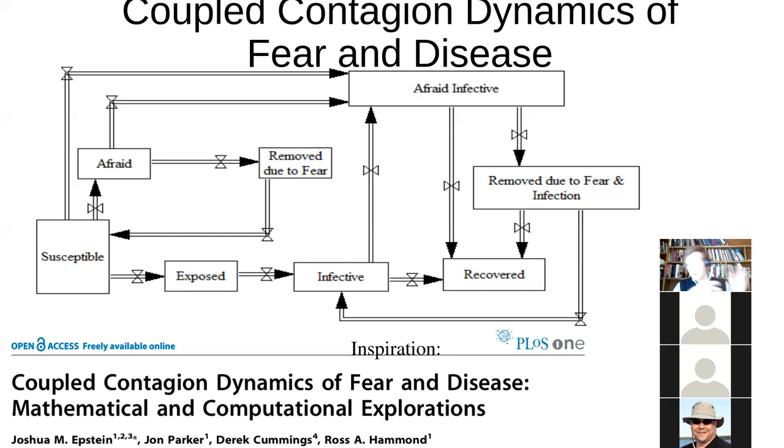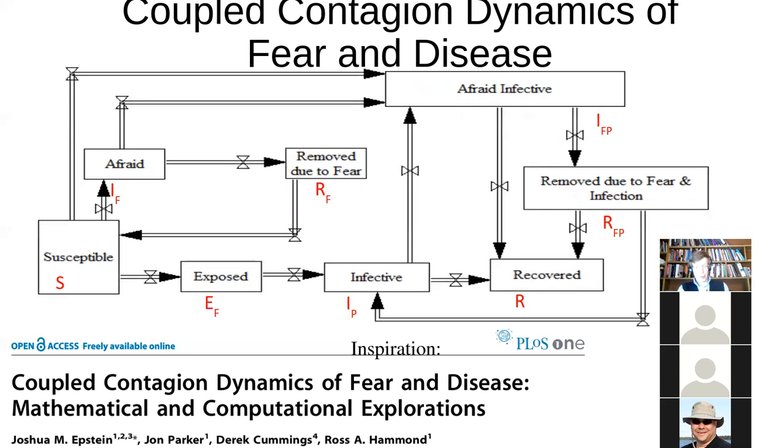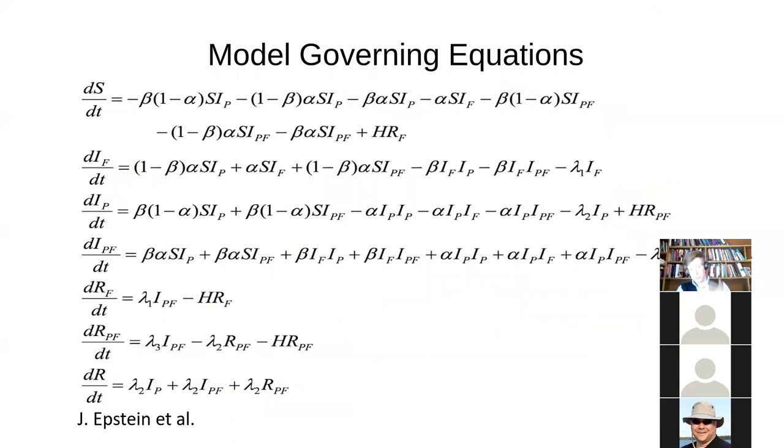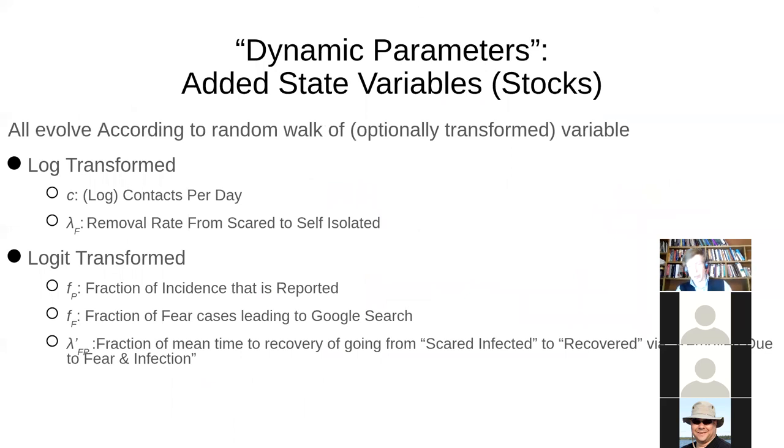Someone might, for example, become concerned and remove themselves due to concern in a way that would lower their contact rates. But people might become anxious at the same time that they get infected and become an afraid infected. Someone like that might not shield themselves from infection, but they might, through removal, shield others from infection. With this idea in mind, they created two models. One, a compartmental model like that here. The other, an agent-based model. As is the tradition in areas of mathematical epidemiology, they denoted each of these with a brief state variable characterization, and they introduced the equations.